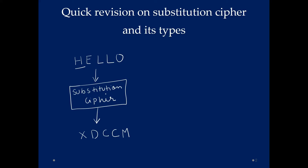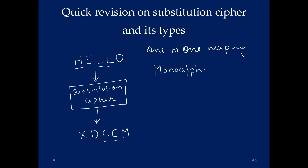As you can see here, L is repetitive — there are two L's, and hence even in the cipher text it has been replaced by two C's. That means letter L has been mapped to letter C, H was mapped to X, E is mapped to D, L is mapped to C, and O is mapped to M. This is known as one-to-one mapping, and hence such type of substitution ciphers are called monoalphabetic substitution cipher.